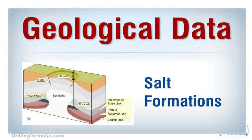There are several parts of the world where pure and thick layers of salt are present. Typically, salt formations are laterally and upwards forced, causing salt domes. Because salt is impermeable, it does not allow formation fluid to pass through it; therefore, formations below a salt formation are possibly abnormal pressure.